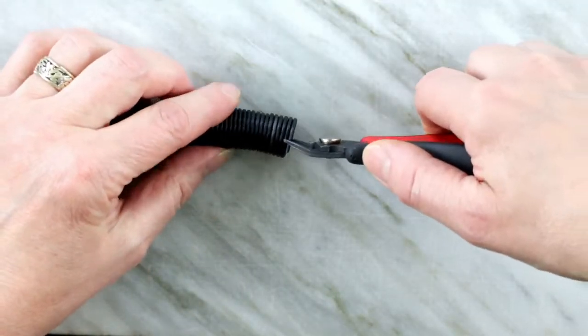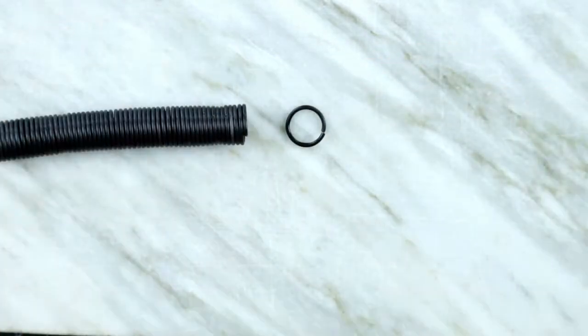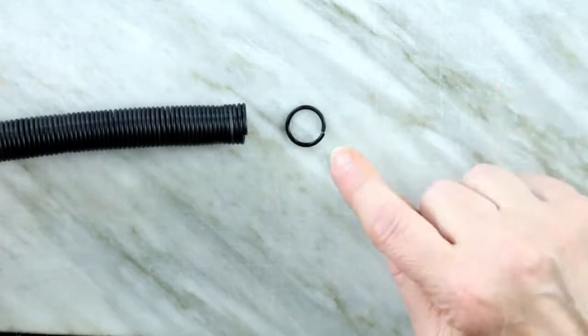Now we are ready to cut it. Right where it makes a full circle. And we have a jump ring.